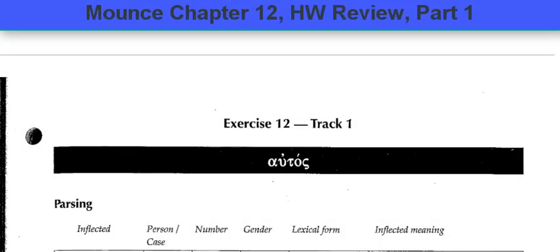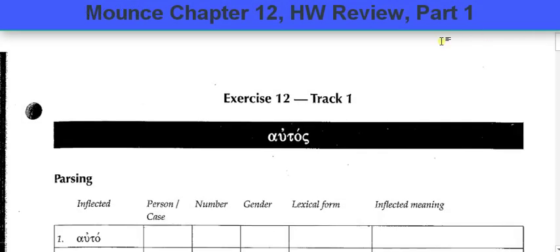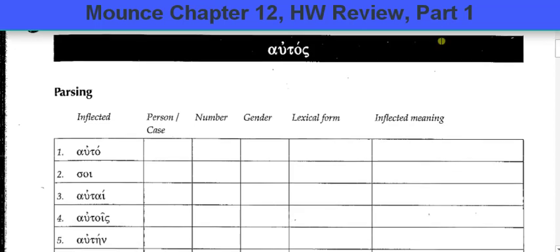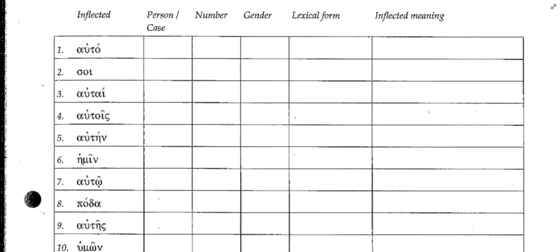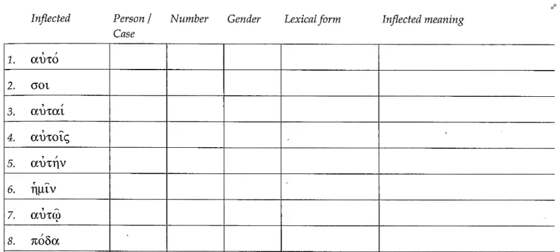Let's take a look at chapter 12, we've got some parsing questions here. Are there any questions about the parsing, anything at all? A question about the lexical form for any of the forms of 'autos', whatever the gender is.